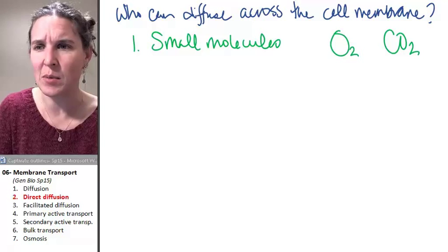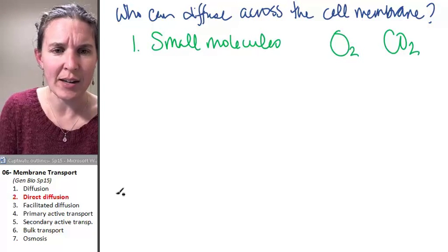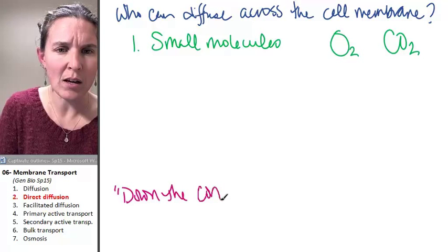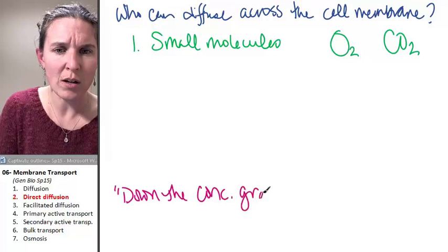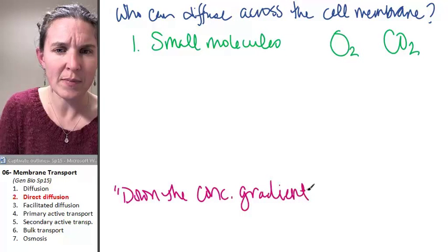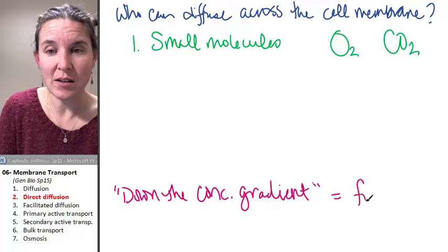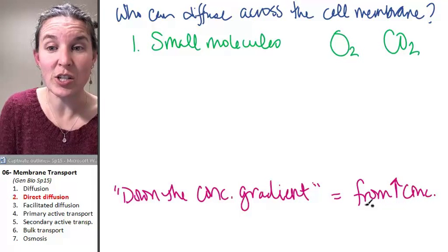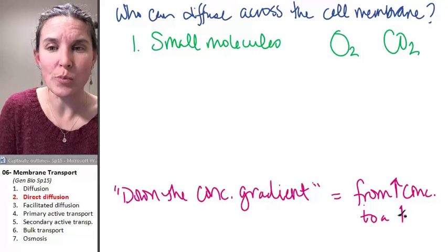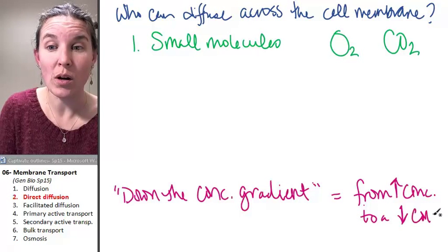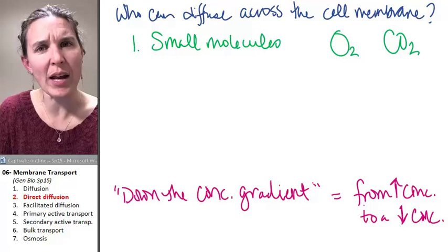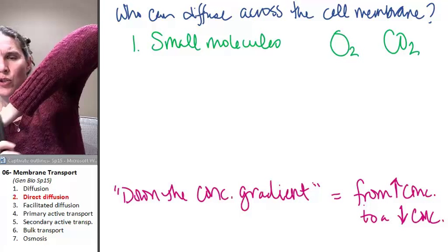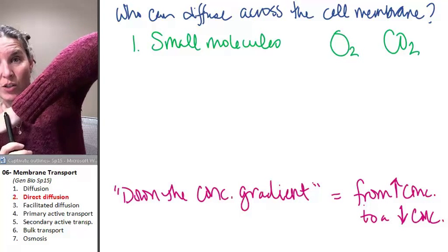I'm going to write that down because I don't want anybody to not understand that. Down the concentration gradient. That means from a high concentration to a low concentration. If you go from a high concentration to a low concentration, you're going down the concentration gradient.